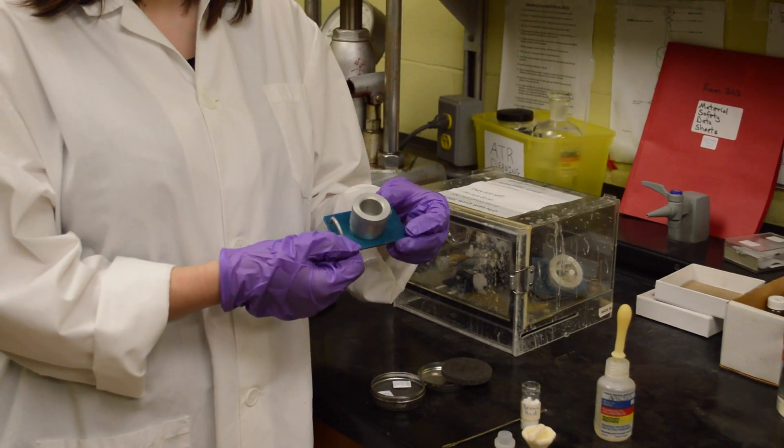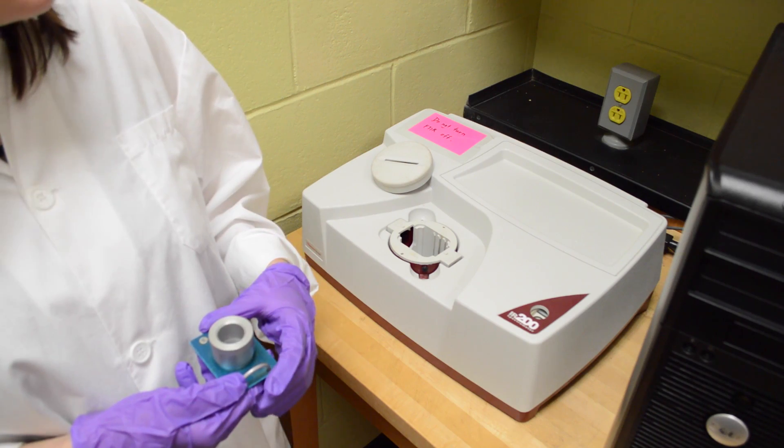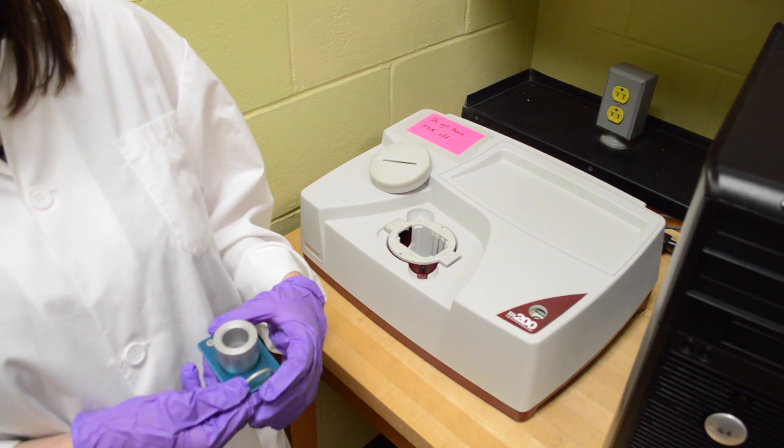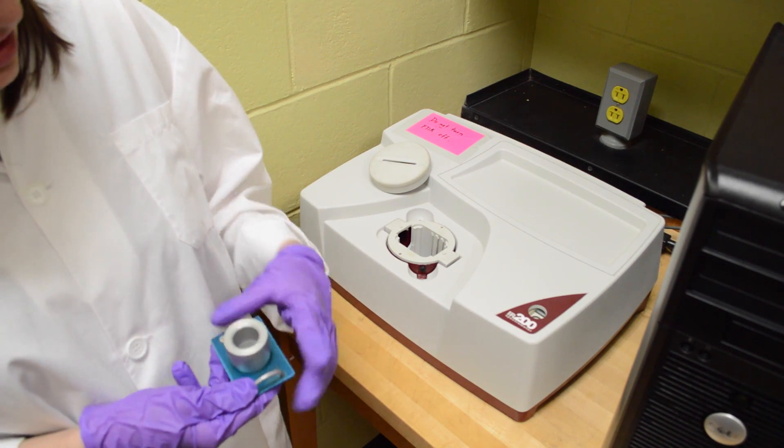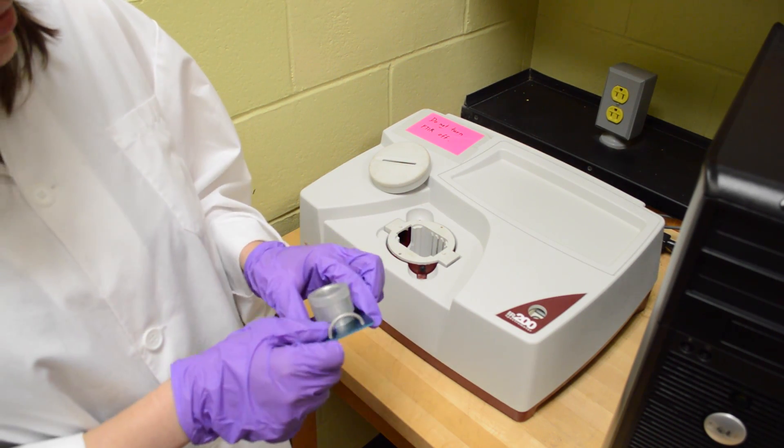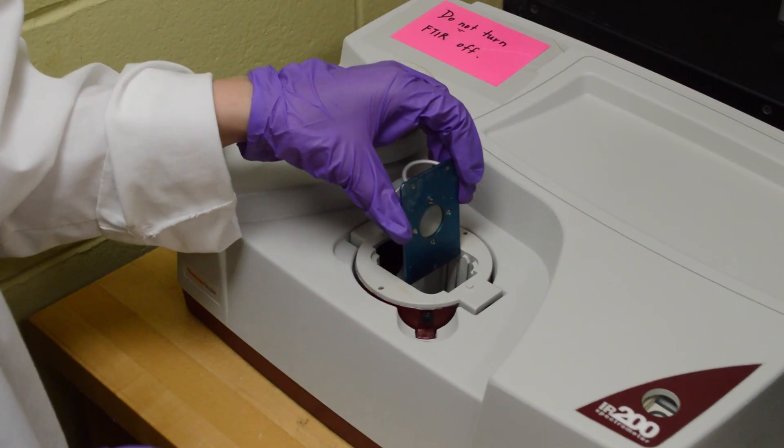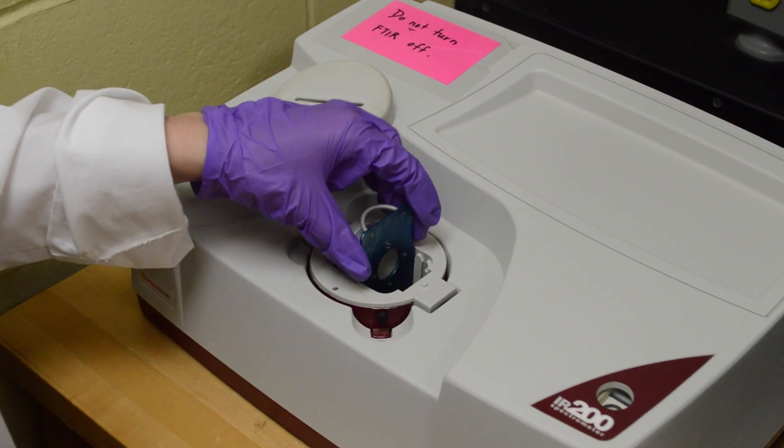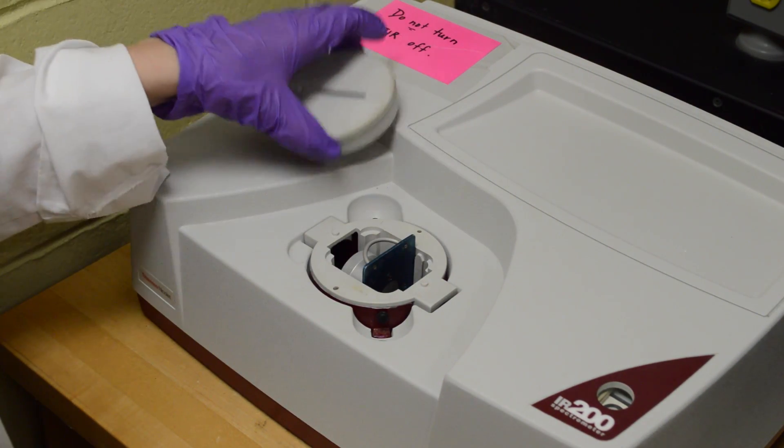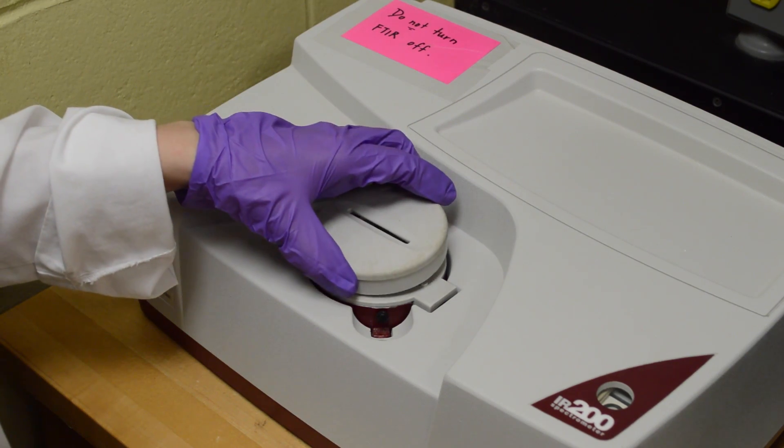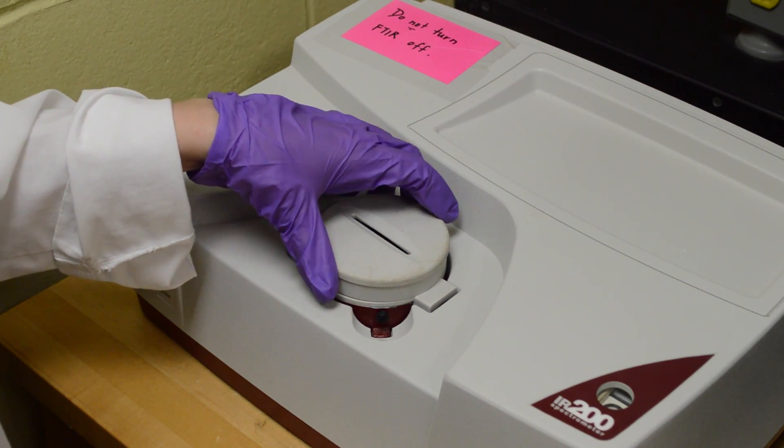We'll take it over to the spectrometer. Once you've collected your Nujol background and you're ready to load your sample, just take your sample inside the plates and the holder. Insert it into the slit within the machine like so, and then cover it with the cover. And you're ready to go.